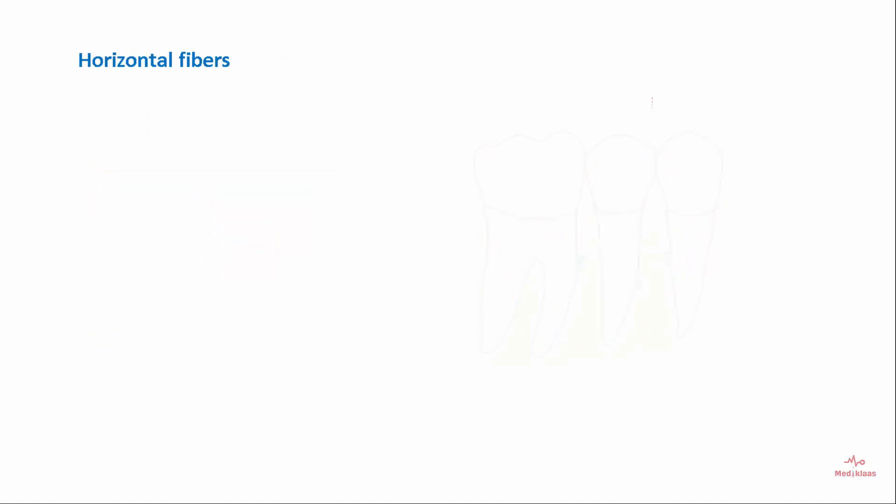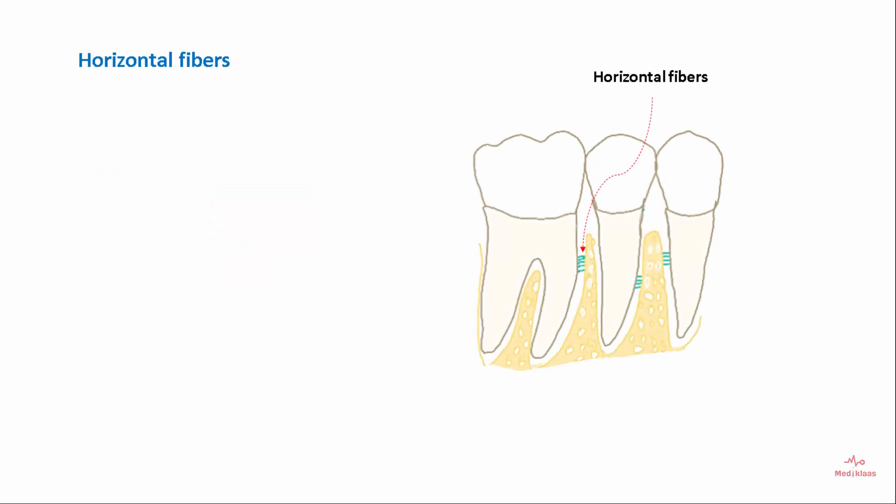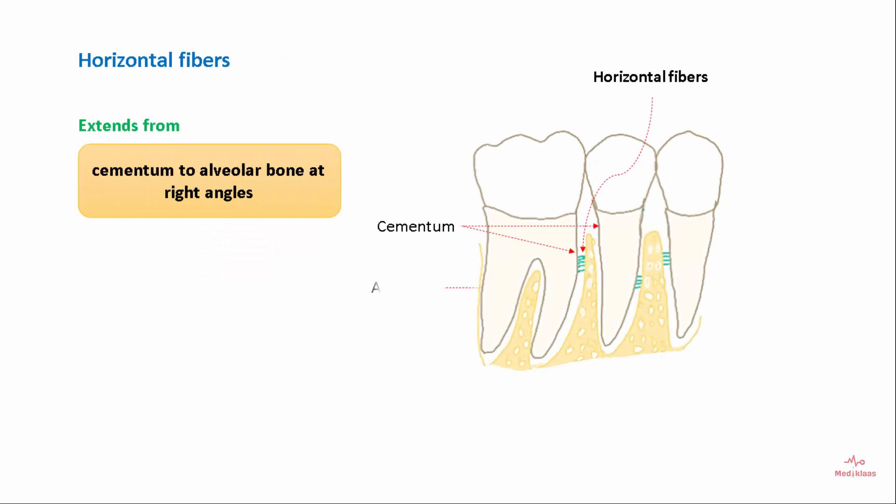The horizontal group of fibers extends from the cementum to the alveolar bone at right angles.